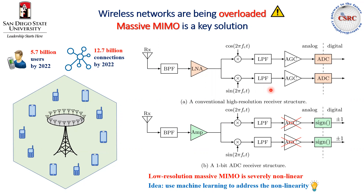So one practical solution to save the cost and power consumption is to use low-resolution ADCs, because a low-resolution ADC has a simple structure and also very low power consumption. However, the system becomes severely non-linear in case of low-resolution ADCs.